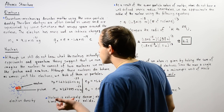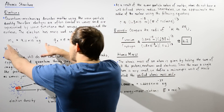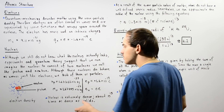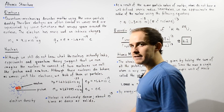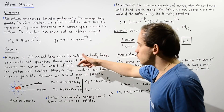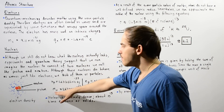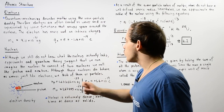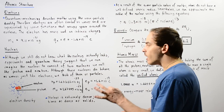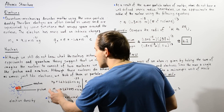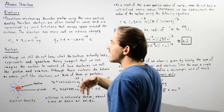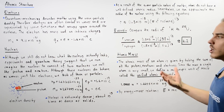Just like an electron has an intrinsic electric charge and a mass, protons and neutrons also have a charge and a mass. The mass of the proton is about 1.67262 times 10 to the negative 27 kilograms, and the mass of the neutron is slightly higher at 1.67493 times 10 to the negative 27 kilograms. Both the proton and neutron have a greater mass than the electron by about 1,800 times as much.